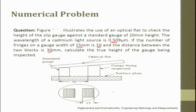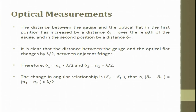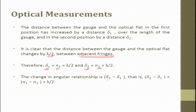Optical flat is exhaustively used for such measurements. The distance between the gauge and the optical flat in the first position has increased by delta 1 over the length of the gauge, and in the second position by delta 2. It is clear that the distance between the gauge and the optical flat changes by lambda/2 between adjacent fringes. Therefore, delta 1 = n1 × lambda/2 and delta 2 = n2 × lambda/2, and the change in angular relationship is delta 2 minus delta 1 = (n2 − n1) × lambda/2.